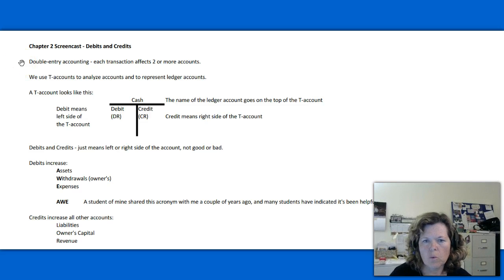If you recall from the Chapter 1 screencast, we mentioned double entry accounting, and you've also seen that mentioned in your text and materials. The concept of double entry accounting is that each financial transaction affects two or more accounts. It may affect more than two, but it's going to affect at least two accounts. So there's going to be at least two entries for each financial transaction in our accounting system.